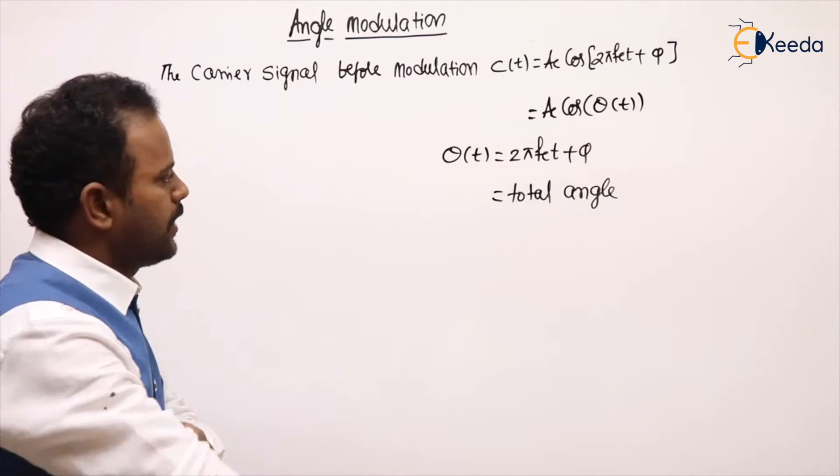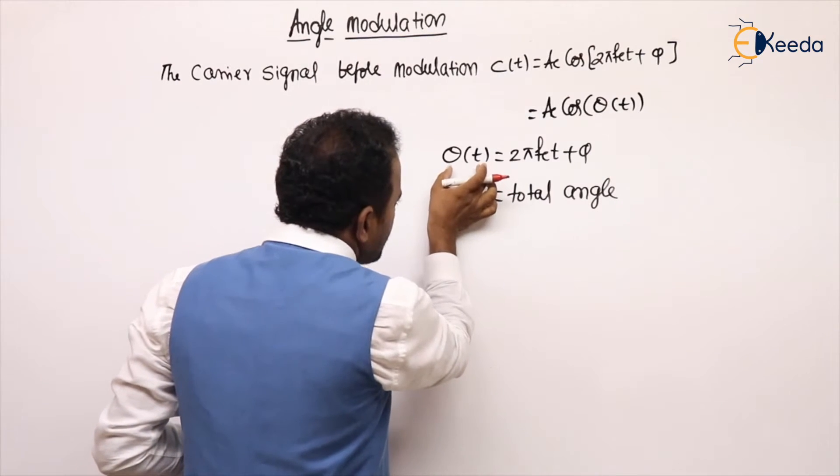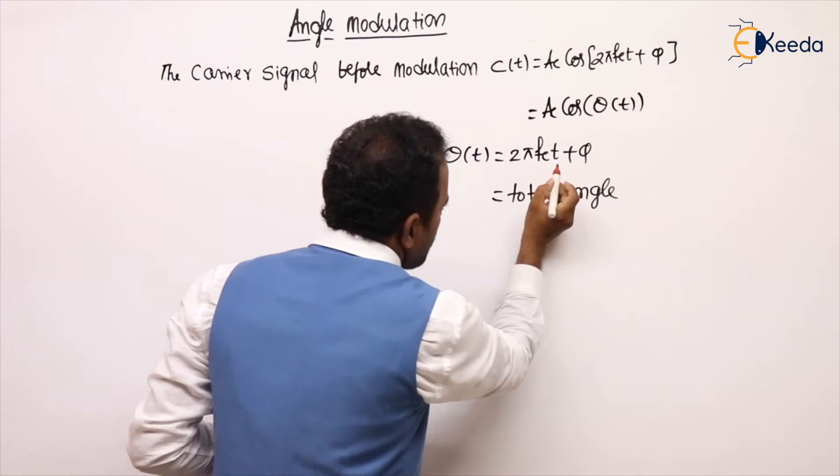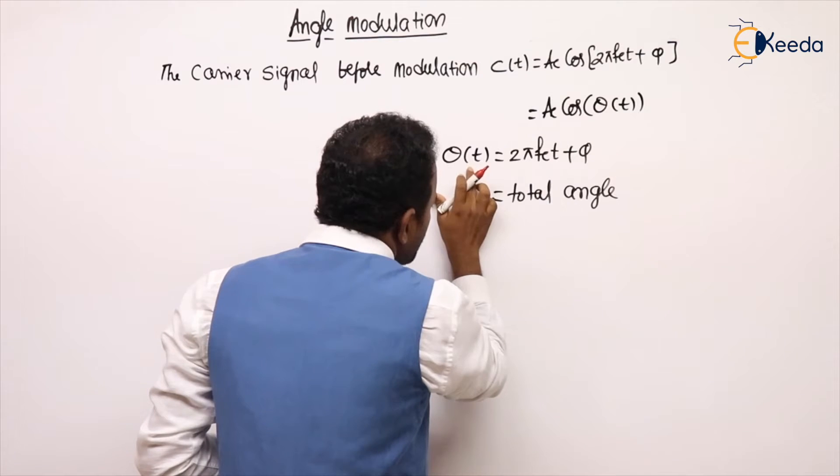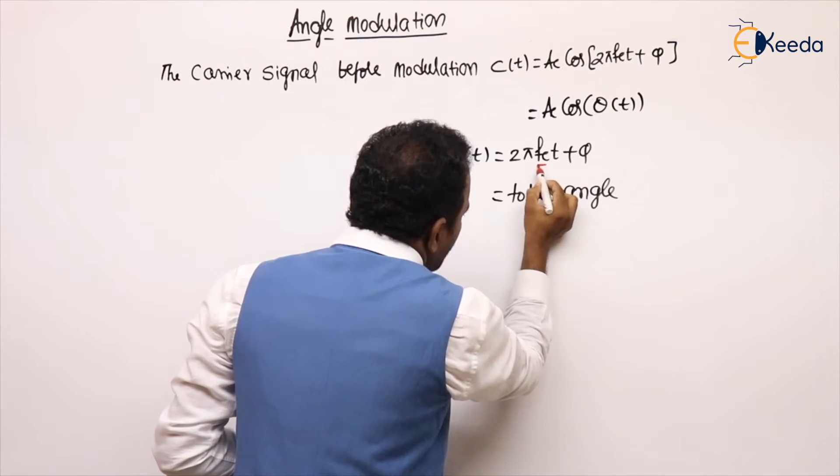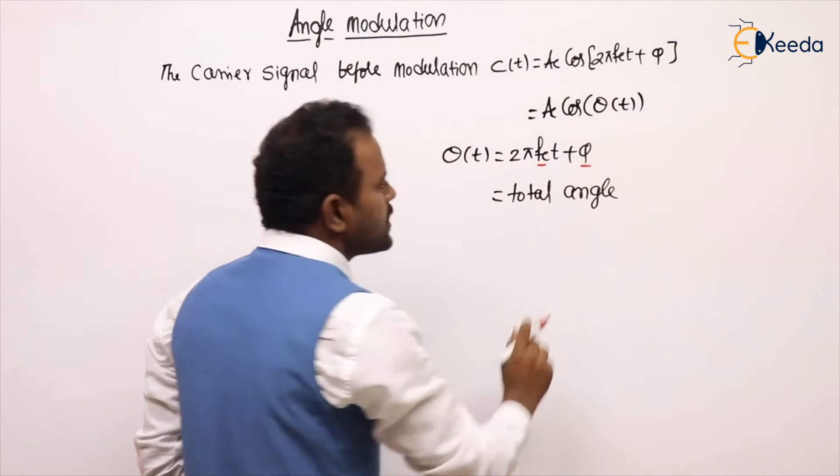Are you following my point or not? Now, here θ(t) is varying means, of course, t is time independent variable. It does not vary with anything. θ(t) is varying means either frequency is varying or phase is varying.